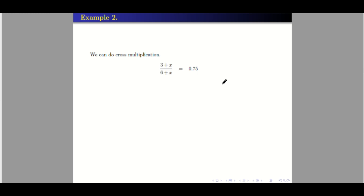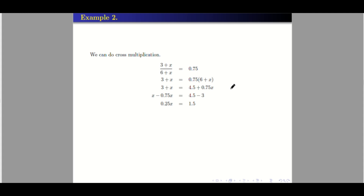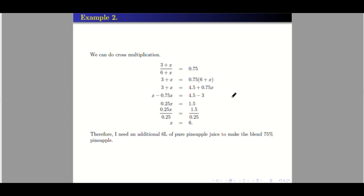We can do cross multiplication since we can place 1 under the 0.75. So: 0.75 times 6 is 4.5, and 0.75 times X is 0.75X. We separate terms with X and those without. Transposing 0.75X gives negative 0.75X, and transposing 3 gives negative 3 on the right-hand side. So 1 minus 0.75 equals 0.25X, and 4.5 minus 3 is 1.5. Dividing both sides by 0.25, the result is 6. Therefore, we need an additional 6 liters of pure pineapple juice to make the blend 75% pineapple.